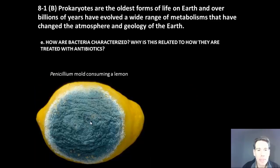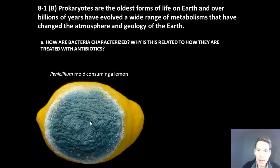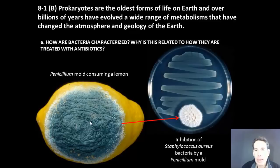Finally, here we see a rotting lemon being eaten by a type of mold called penicillium. The mold is actually in an arms race, competing with decomposing bacteria. These two organisms are chemically fighting each other, and the penicillium has the upper hand — it's making an antibiotic known as penicillin. Penicillin is a naturally occurring chemical secreted by the mold, and you can see it diffusing into the agar, so this staphylococcus aureus bacteria cannot grow around it. There's that zone of inhibition.